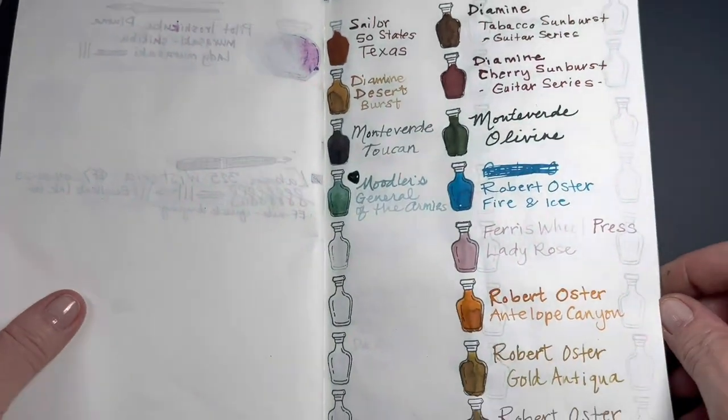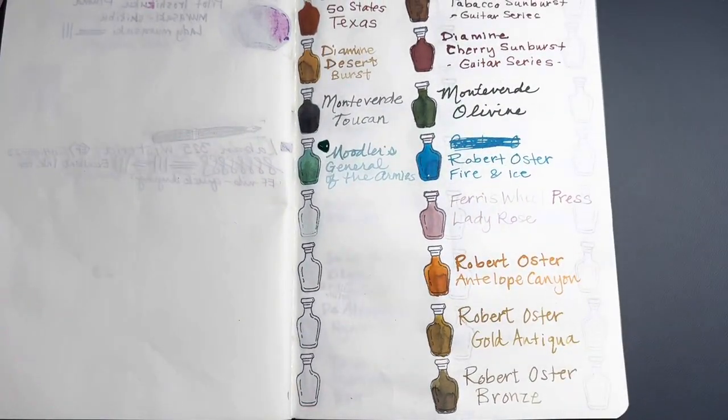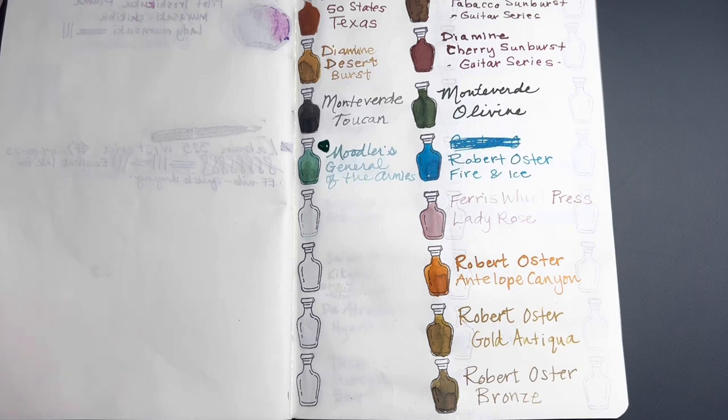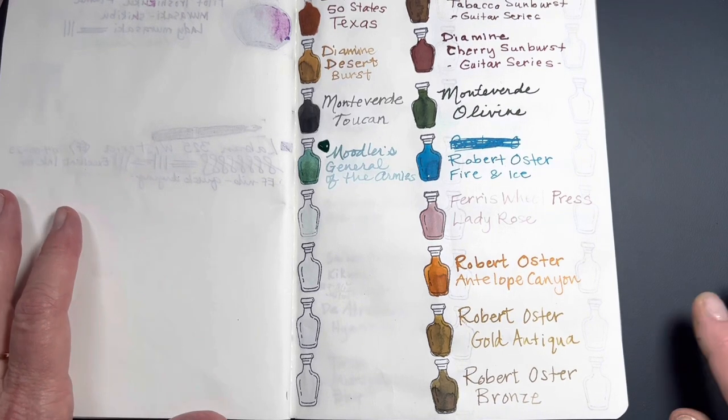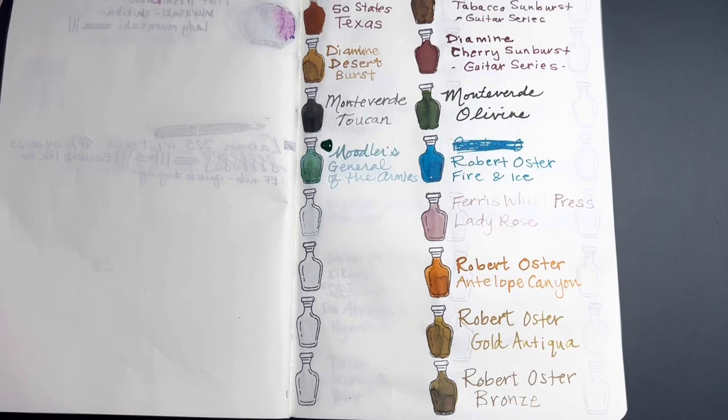So, that's a wrap for all the ink samples that we wanted to swatch together today. Again, these were from Goldspot, Pen Chalet, and Goulet. So, hope you found a favorite that you'd like to try out and maybe place in order for your samples or even your full bottle. Thanks for spending your precious moments with me. You have a blessed day. Bye.